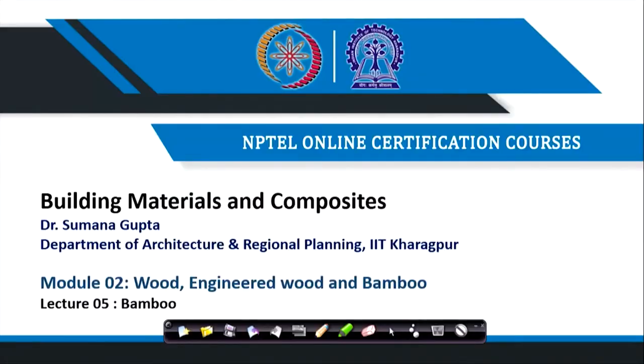Welcome everyone, we are in the last lecture of module 2. We started with wood; in the previous lecture we tried to understand engineered wood. These are all readily available in the market and acknowledged by our codes and standards. All plywood and MDF boards we discussed have an ISI stamp. Wood also — particular types of wood have their stamps and are recognized by the Government of India.